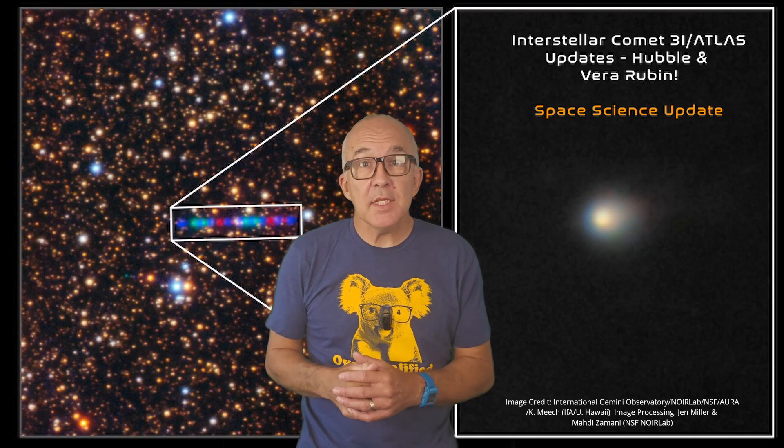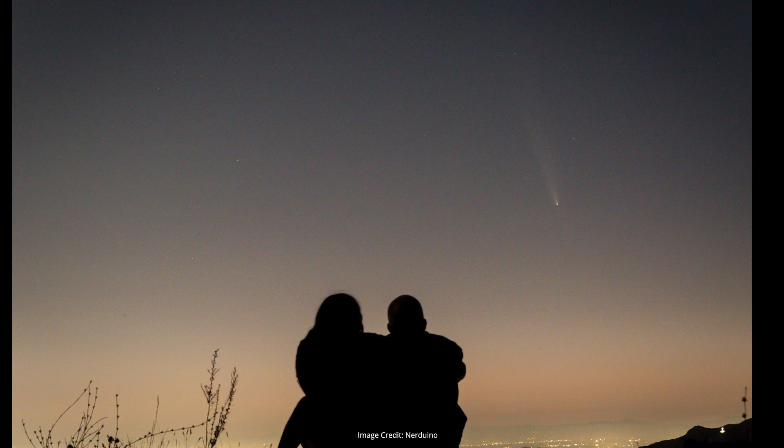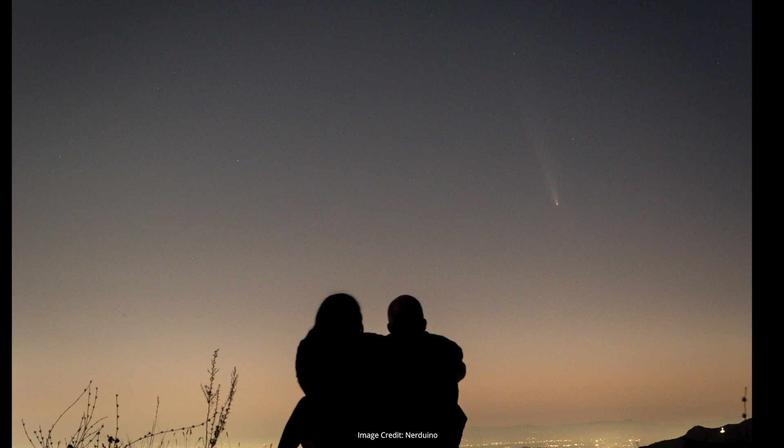Comets are super cool objects, mostly like giant frozen snowballs rushing through the solar system, sometimes bright enough to put on a show in the night sky even with the unaided eye, as you can see here for Comet Tsushinsan Atlas in 2023.